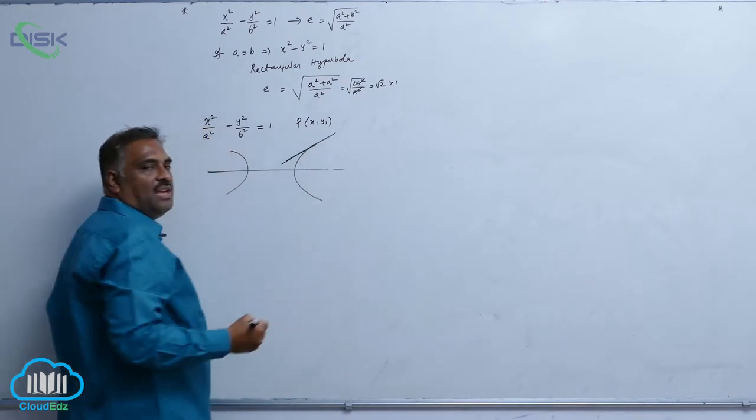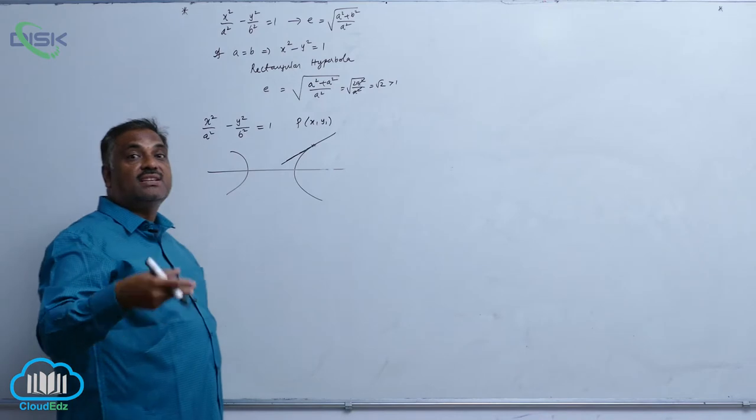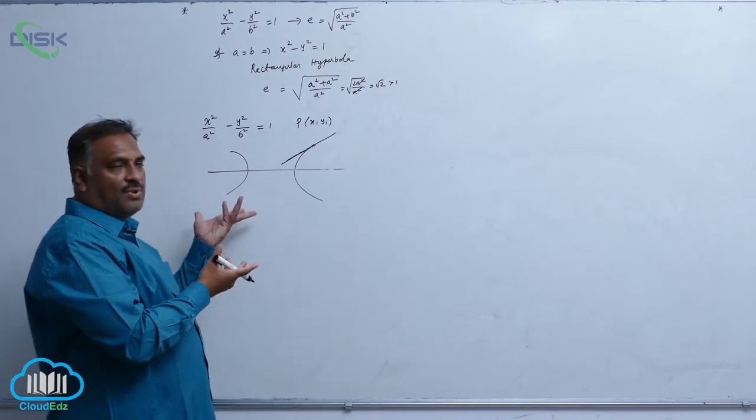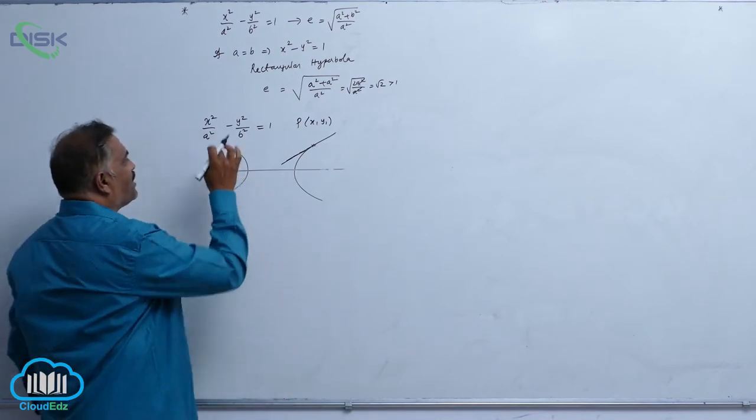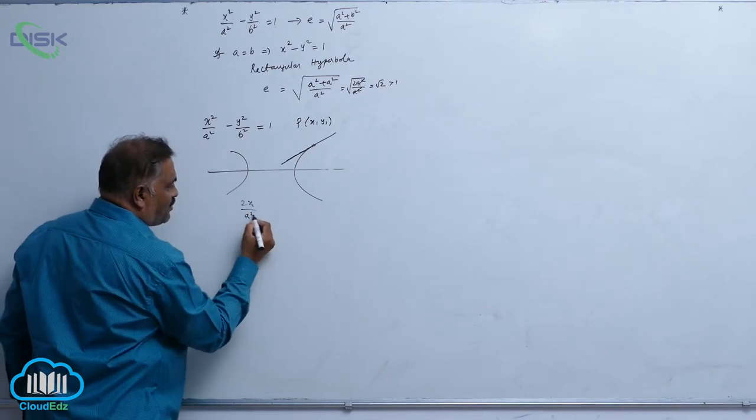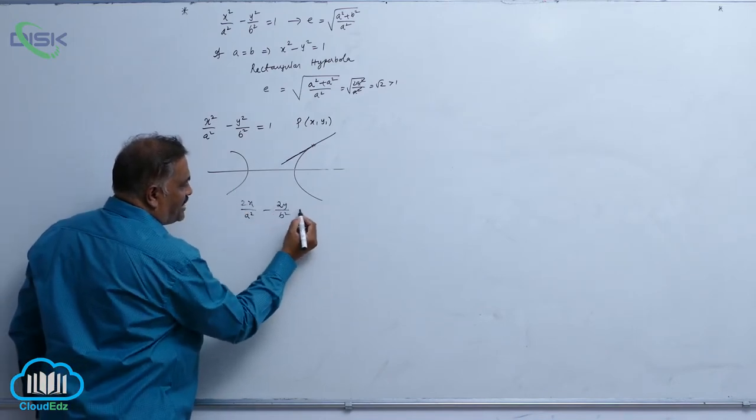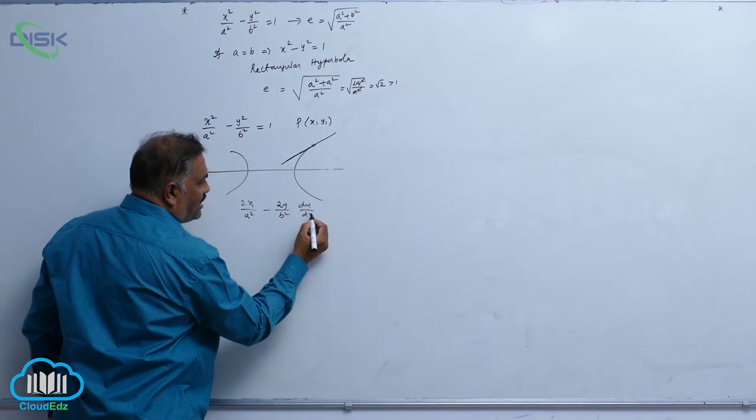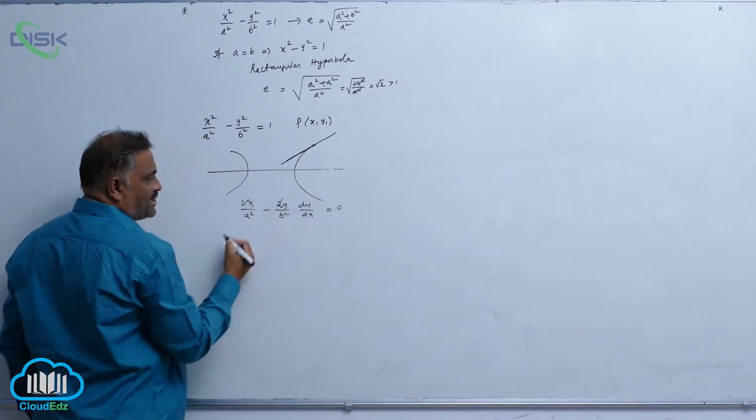Already we derived the equation of tangent in case of ellipse. Same fashion, we will derive here also. Differentiating 2x by a square minus 2y by b square into dy by dx is equal to 0. 2 gets cancelled.